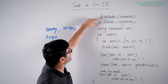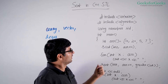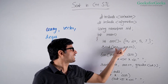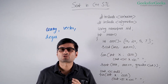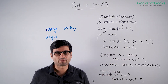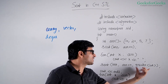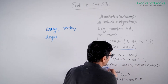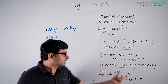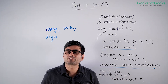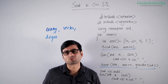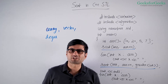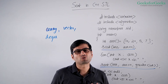This sort function is defined in the algorithm library. There are two ways to call the sort function. One way is passing two iterators, which sorts the input in increasing order by default. The other way passes a third parameter specifying the order — this third parameter is mainly a comparison function that decides how elements are to be compared.